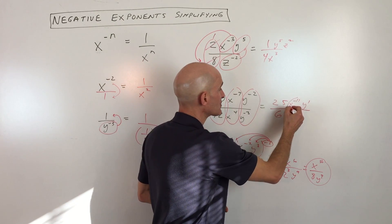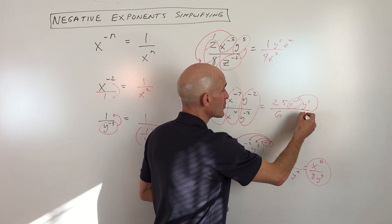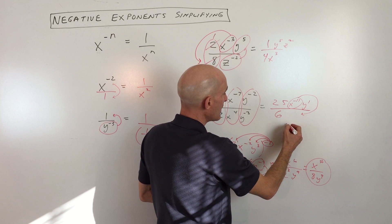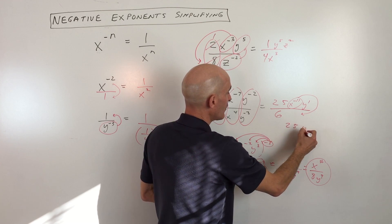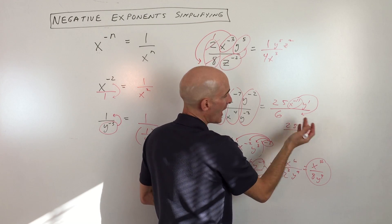So we're almost done, but we just want positive exponents in that final answer. So we're going to take this quantity here, we're going to move it to the other side of the fraction bar. So that gives us 25 y to the first, or you could just say y, divided by 6 x to the 11th power. And that's your final answer.